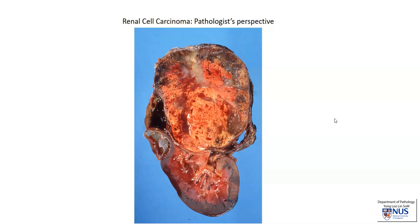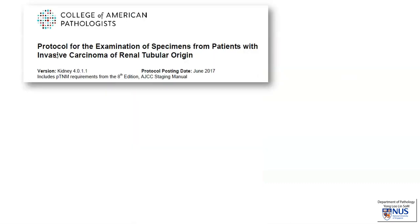Hello. We're going to look at how a pathologist provides some important prognostic information when examining a case of renal cell carcinoma. To begin with, I would like to share the protocol that we often use, which is laid out by the College of American Pathologists. It is internationally well known and provides a system of assessing for prognostic factors.